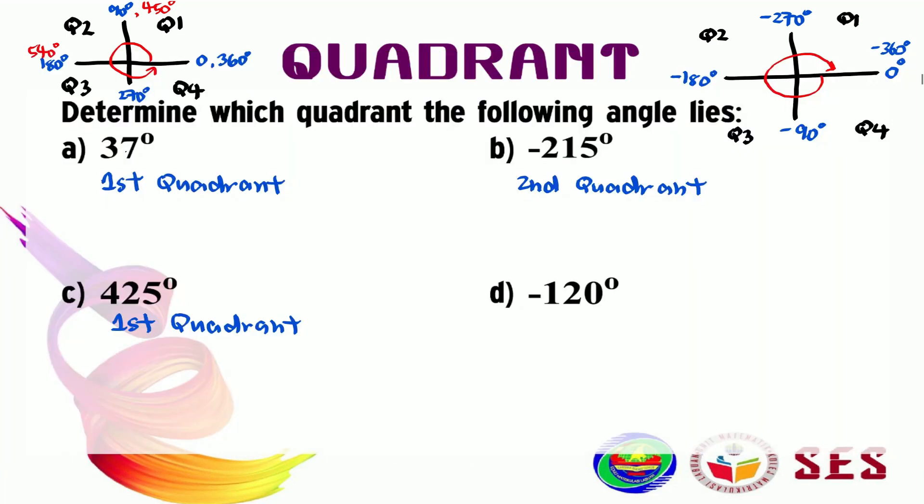So what's your answer for question D? Your answer should be the third quadrant. This is a negative angle that means it moves in the clockwise direction. And since 120 degrees lies between negative 90 degrees and negative 180 degrees, therefore, it lies in the third quadrant over here.